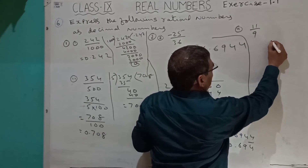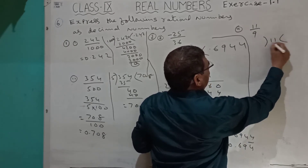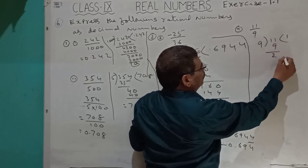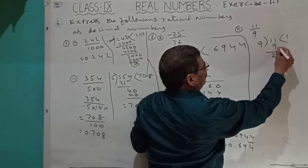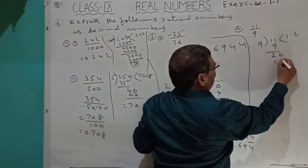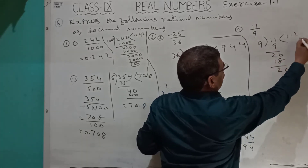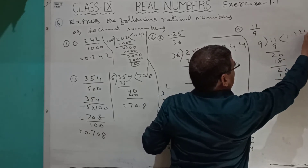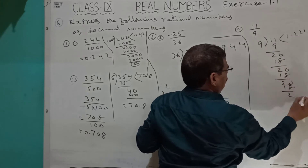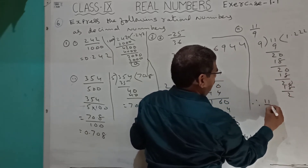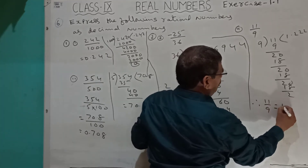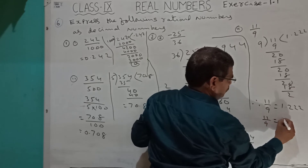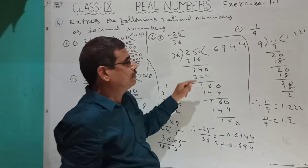For 11 by 9: 9 ones are 9, remainder 2. Bring down 0, 9 twos are 18, remainder 2. This repeats. So 11 by 9 equals 1.222..., written as 1.2 bar.